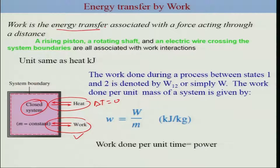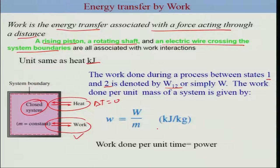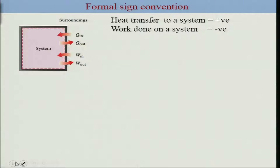Work is the energy transfer associated with force acting through a distance. Examples are the rising piston, rotating shaft, and electrical wire crossing the system boundary. The unit is the same as that of heat, that is kilojoules. Work during a process between 1 and 2 is referred to as W12, not delta W. Work done per unit mass is given by division of W with mass, written as small w. Work done per unit time is power.